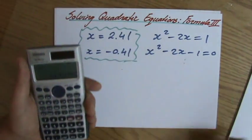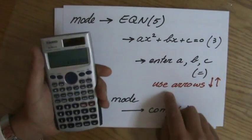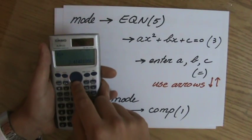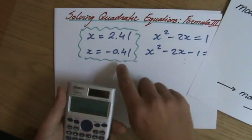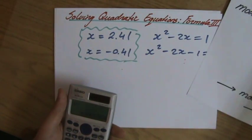However, where is my second answer? Well, then I have to use the arrows to go down. And then I get X2, minus 0.41 and all the other decimals. You see that?